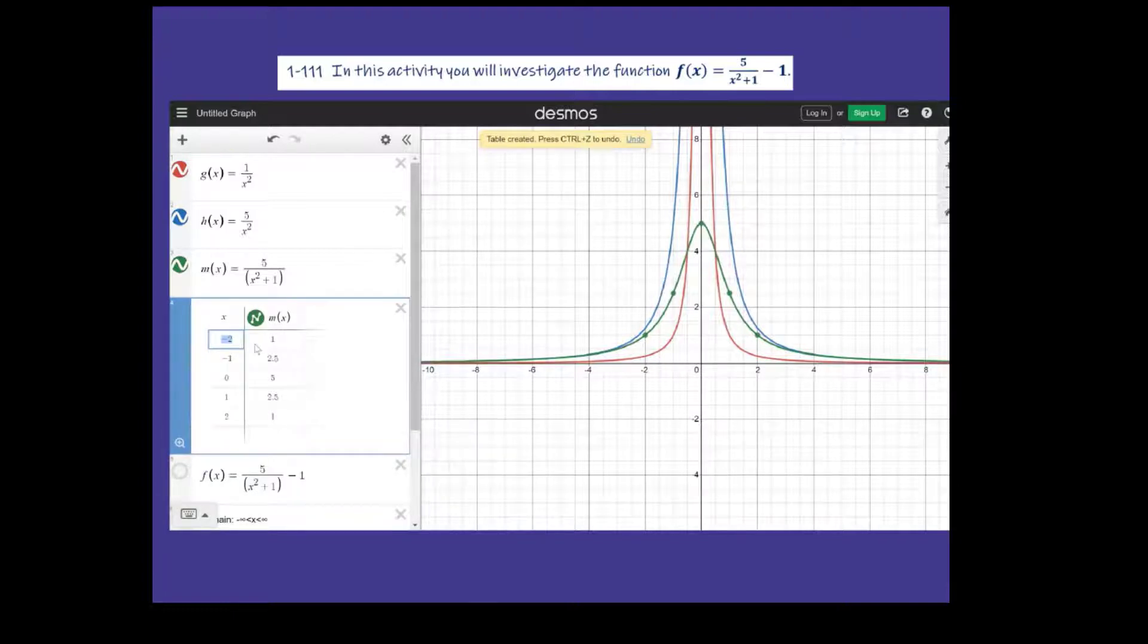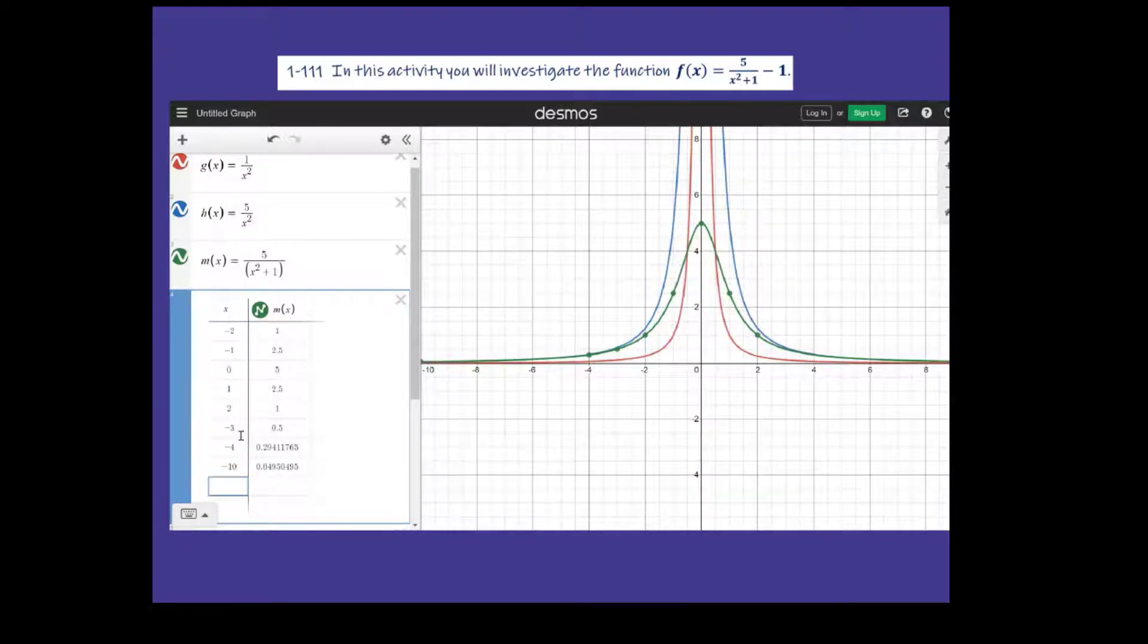And you see basically negative 2, 1, negative 1, 2.5, 0, 5, 1, on and on. But if I start going out farther on the x, so let's go negative 3, then let's do negative 4, then let's do negative 10. You see this? It's getting closer to 0, but it's really not hitting it. Let's try negative 100.